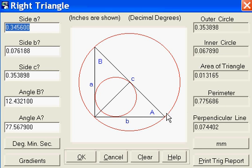The perimeter, if you were to walk around that triangle, you would cover .775686 inches. The perpendicular line is a line in the center of the hypotenuse drawn perpendicular to the point of intersection of the two sides.